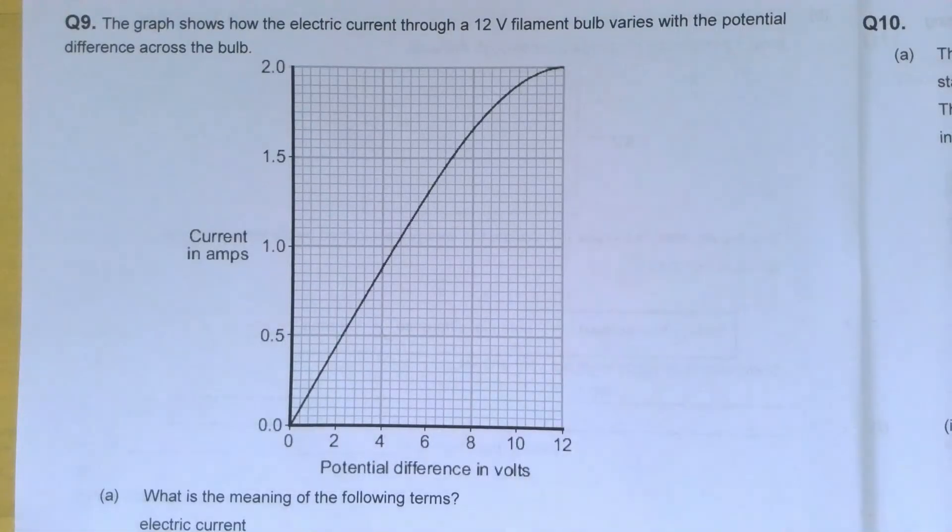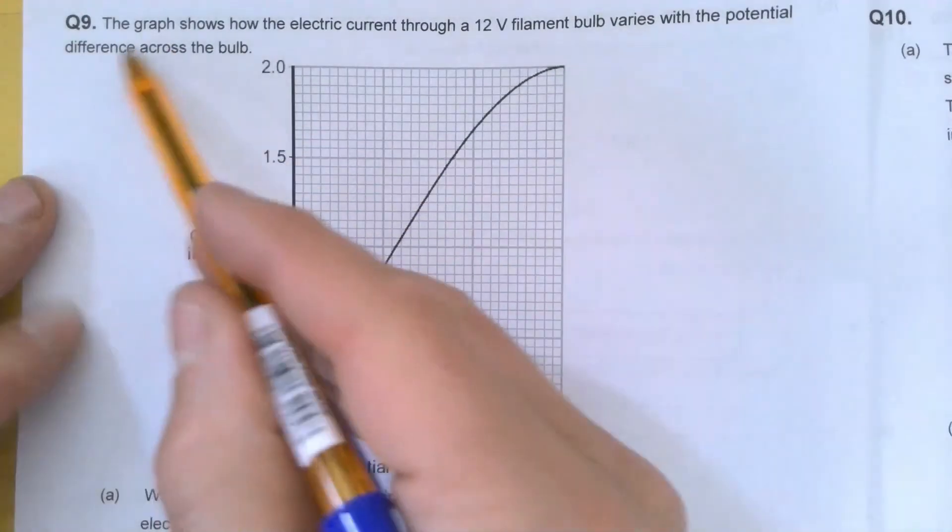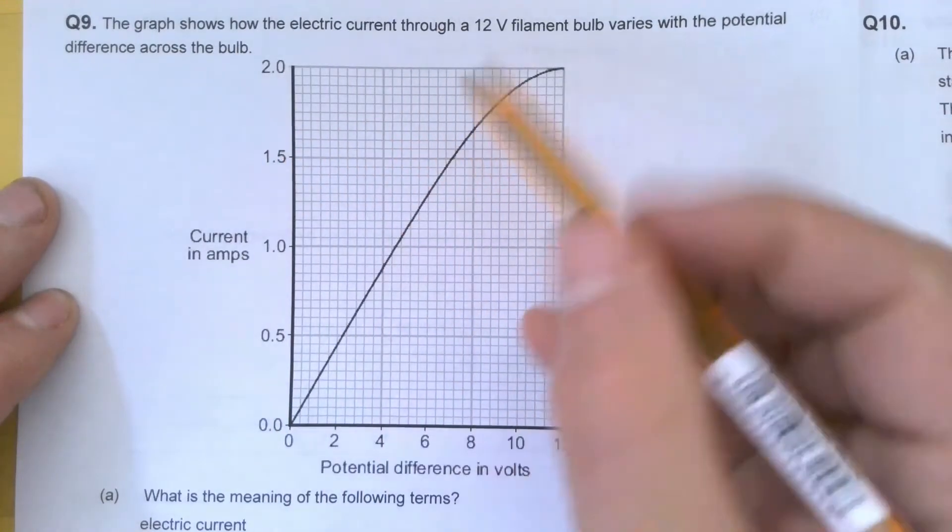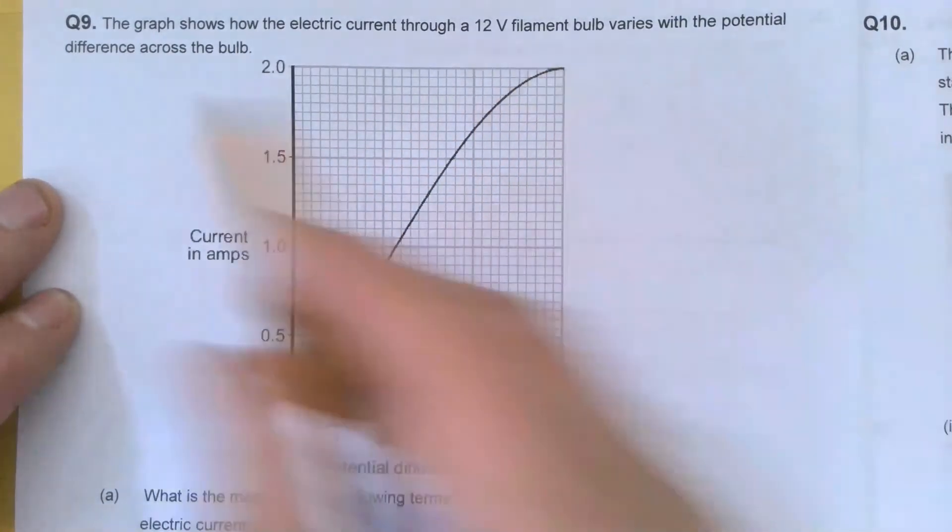Hello and welcome to this video looking at a walking talking mock, the circuits high demand questions. We're looking at question 9 today. The graph shows how the electric current through a 12 volt filament bulb varies with the potential difference across the bulb.